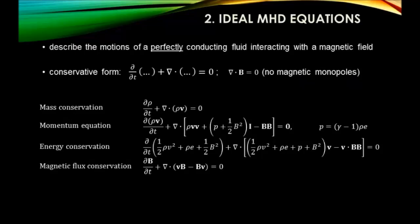The ideal MHD equations look horrible at first glance but are actually really beautiful. They describe in a mathematical way the motions and the mass - pretty much everything within the assumptions - for a perfectly conductive fluid interacting with the magnetic field. I will present them in conservative form: the partial derivative in time of a density plus the divergence of a flux equals zero.